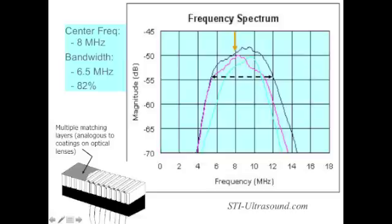Another important element to consider is the impedance matching layer. The matching layer should be the thickness of a quarter of a wavelength. In transducers that have a wide frequency bandwidth, multiple matching layers must be present to provide efficient sound transmission between the piezoelectric element and the soft tissue, since a single matching layer serves only one specific frequency. Thus, well designed backing elements and matching layers allow the transducer to operate at different frequencies.